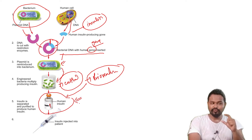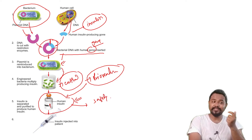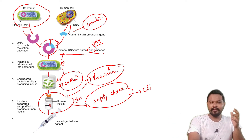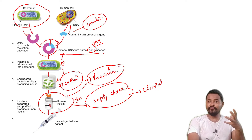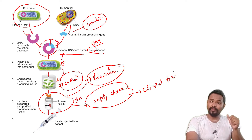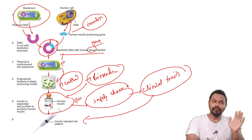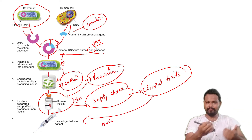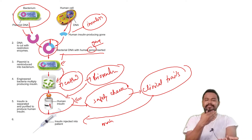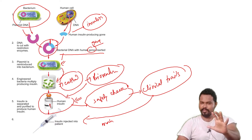Finally, the insulin hormone is bottled with a tag and safety measures. It goes through clinical trials. Then it reaches marketing. This is a multi-billion dollar industry targeting diabetes patients.